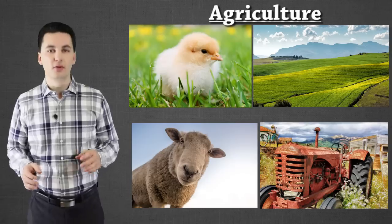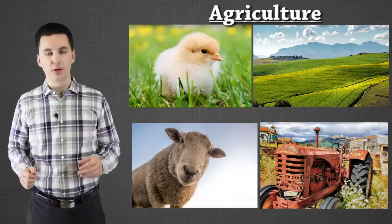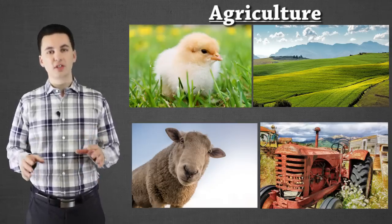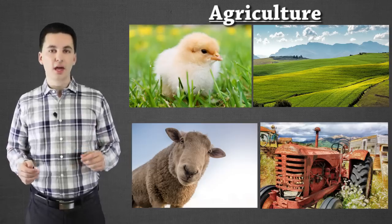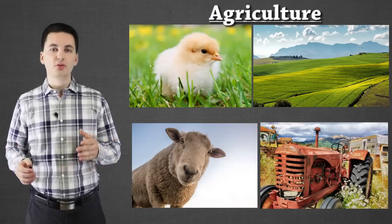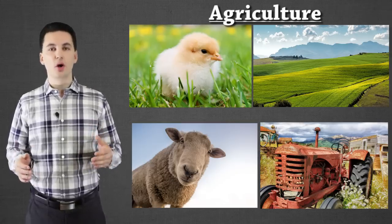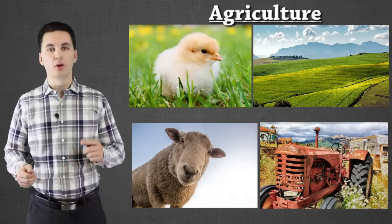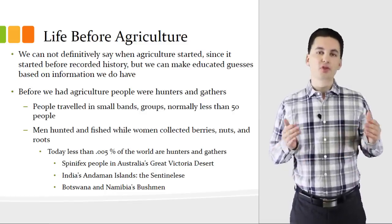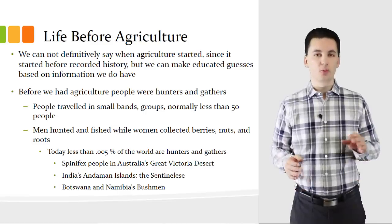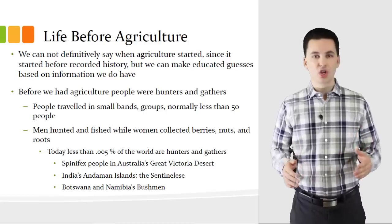Today over 97% of the farmers in the world are actually located in LDCs — less developed countries. The next thing we're going to get into is how agriculture has evolved over the years. This is important because these different agricultural revolutions have made it possible for us to grow as a species and feed our growing population. The hard thing with figuring out exactly when agriculture truly started is we have to go so far back in time that we don't have written records, so it's really hard to pinpoint that exact moment of the first agricultural revolution.